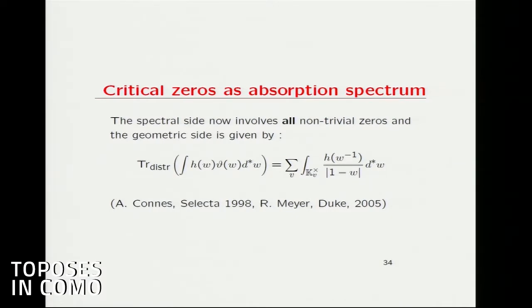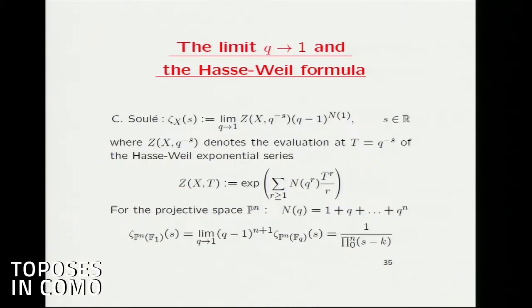With this idea of absorption spectra, and with the help of Ralf Meyer in 2005, one can really understand the zeros — and in fact all zeros — as coming from the trace formula, with the work of Ralf Meyer. Now, what about characteristic one? In finite characteristics, something quite important for the geometry is that the analog of the Riemann zeta function is the Hasse-Weil zeta function — a generating function of a counting, counting the points of the curve, because a global field in finite characteristics is associated to a smooth curve.